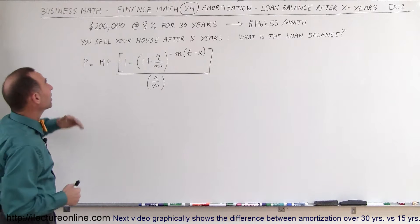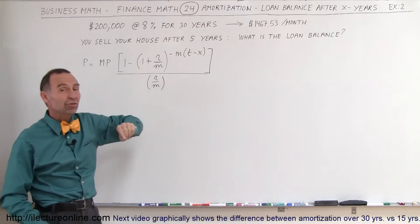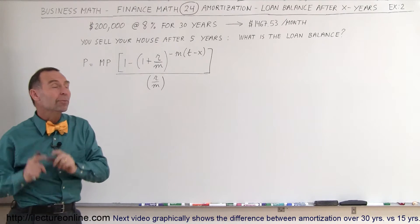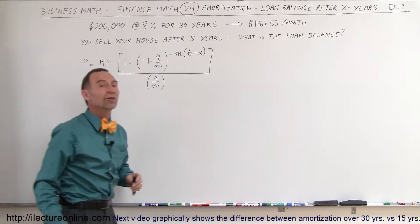So, for example, let's do the same kind of thing. We have a $200,000 loan, but now we're going to have an interest rate at 8% instead of 4% for 30 years. Now your monthly payments went to $1,467.53 per month.